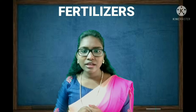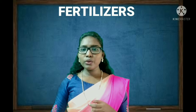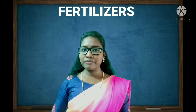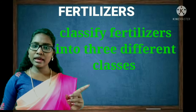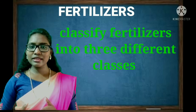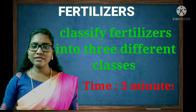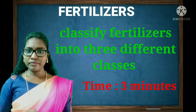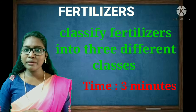Now you have a list of fertilizers and you already know the different types: chemical fertilizers, biofertilizers, and green leaf manure. You have to classify the names of fertilizers into these different types. This is your second activity: classify the list of fertilizers into chemical, bio, and green leaf manure. The time given for this activity is 3 minutes. Are you ready? Then take your notebook and start doing this activity. Your time starts now.